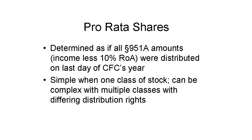Beyond this it actually gets easier, as long as there's only one class of shares in the CFC. By one class, I mean all the shares have the same distribution rights — voting rights are ignored here. With just one class of shares, just multiply the various amounts for each U.S. shareholder by their percentage of the distribution rights owned. You need to do this separately for each of the 951A inclusion, 10% return on assets, and interest amounts. Each shareholder aggregates the 10% amount and interest items separately on their own before netting them.